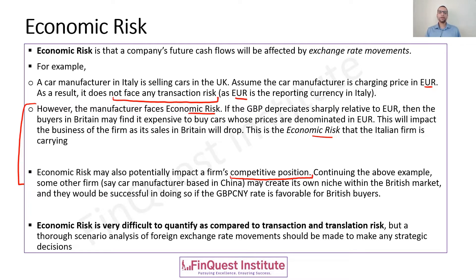We're now talking from the point of view of a competitive position. Because the Italian manufacturer is unable to sell as many cars in the UK, and there is still demand in Britain, that opens up the market for someone else. Say there is a manufacturer in China, and the GBP/CNY exchange rate is very favorable — British buyers would find it cheaper to purchase cars from the Chinese manufacturer, allowing them to carve out a market niche within the British market.